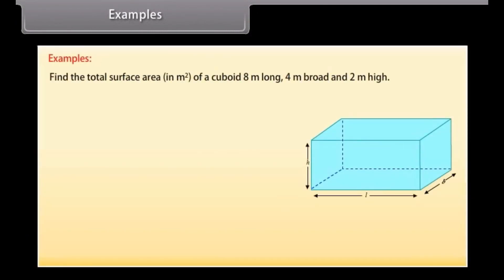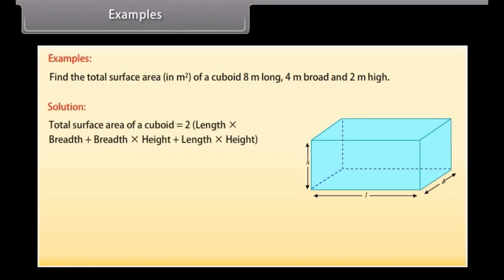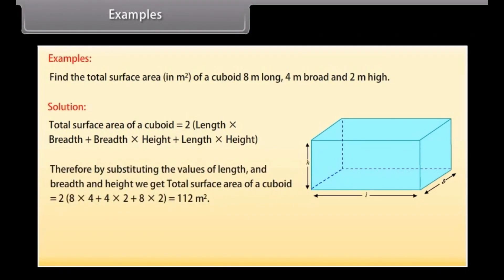Example: Find the total surface area in square meters of a cuboid 8 meters long, 4 meters broad, and 2 meters high. Solution: We know that the total surface area of a cuboid is equal to 2(lb + bh + lh). Therefore, by substituting the values, total surface area = 2(8×4 + 4×2 + 8×2) = 112 square meters.